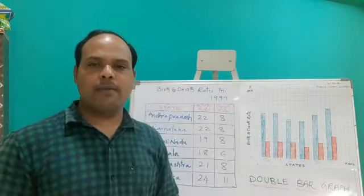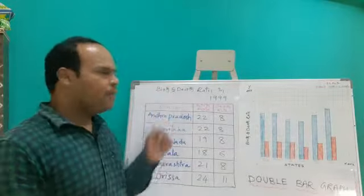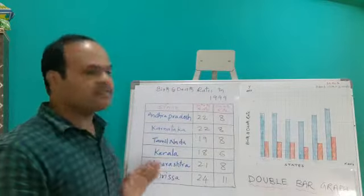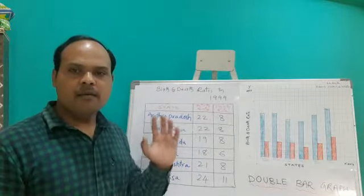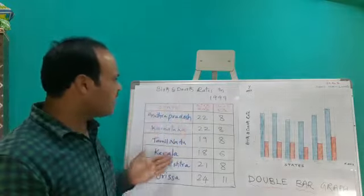So I am going to explain double bar graph with an example. See the example, here I have taken birth and death rate in 1999 of different states. The data is related to birth and death rates of different states in 1999.